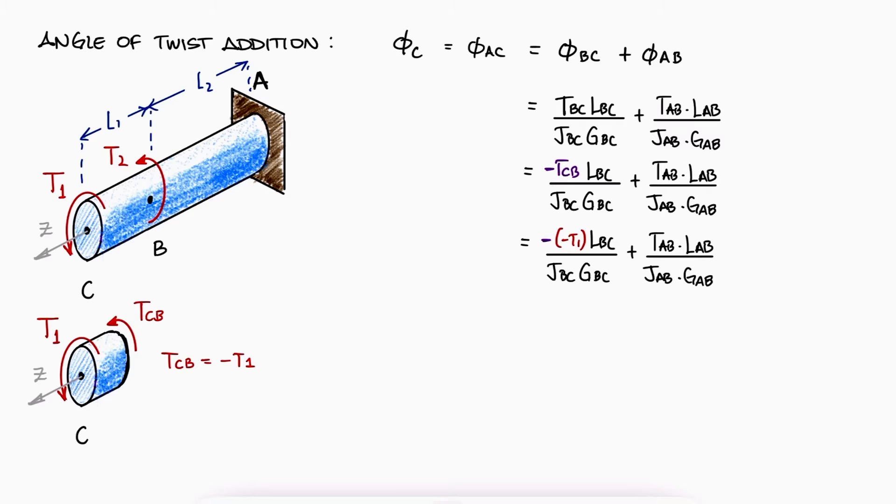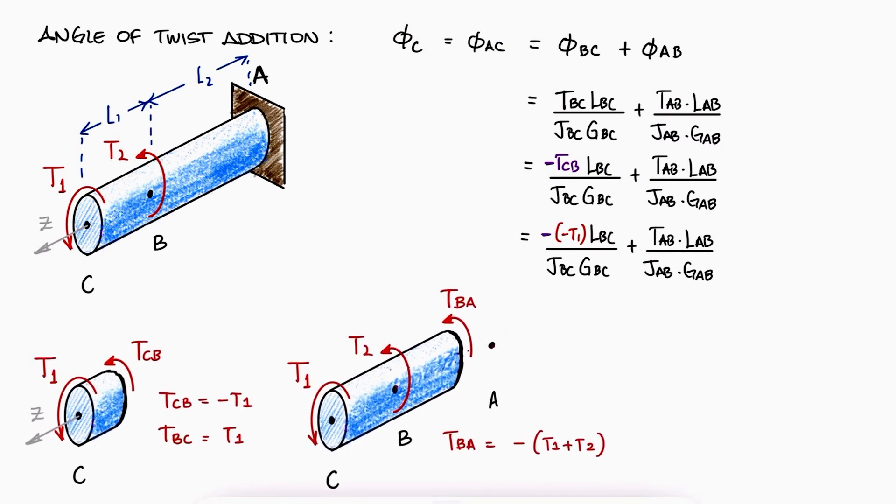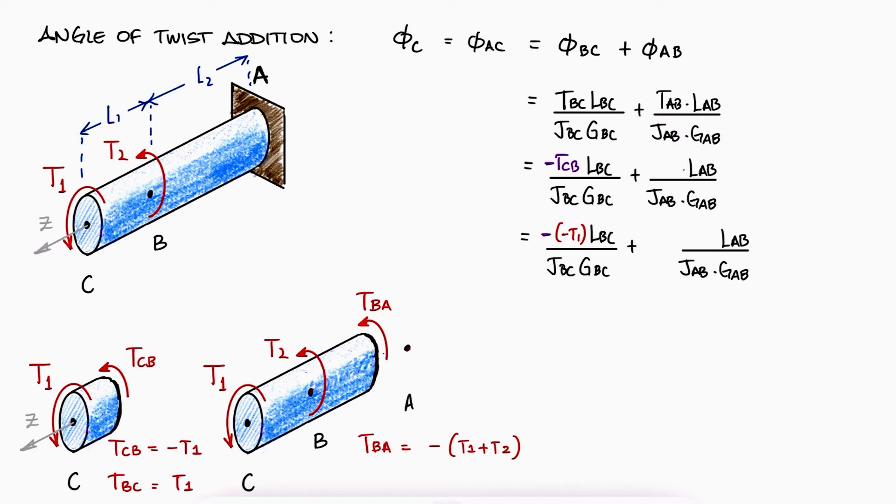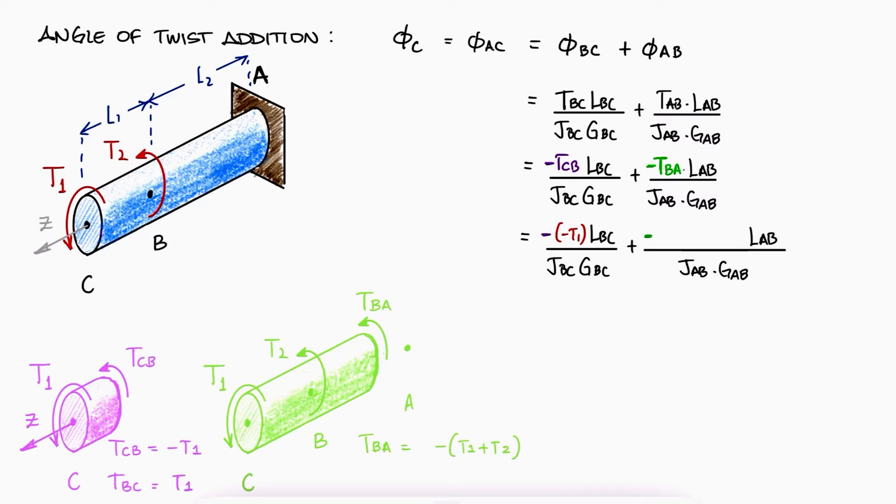This also means that TBC, the one we actually needed, is just positive T1. From before, and having performed the exact same process, the torque from B to A is negative T1 plus T2.